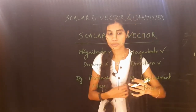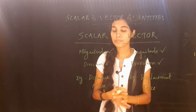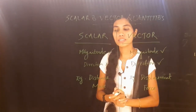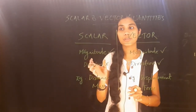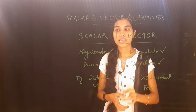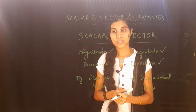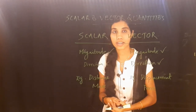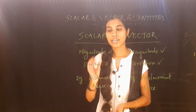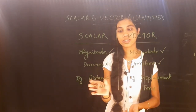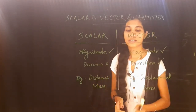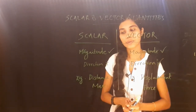For example, if we apply a force, we apply the force in any direction — both magnitude and direction are needed. Force is a vector quantity. Mass, on the other hand, is a scalar quantity. Displacement and force are vector quantities, while mass is a scalar quantity.